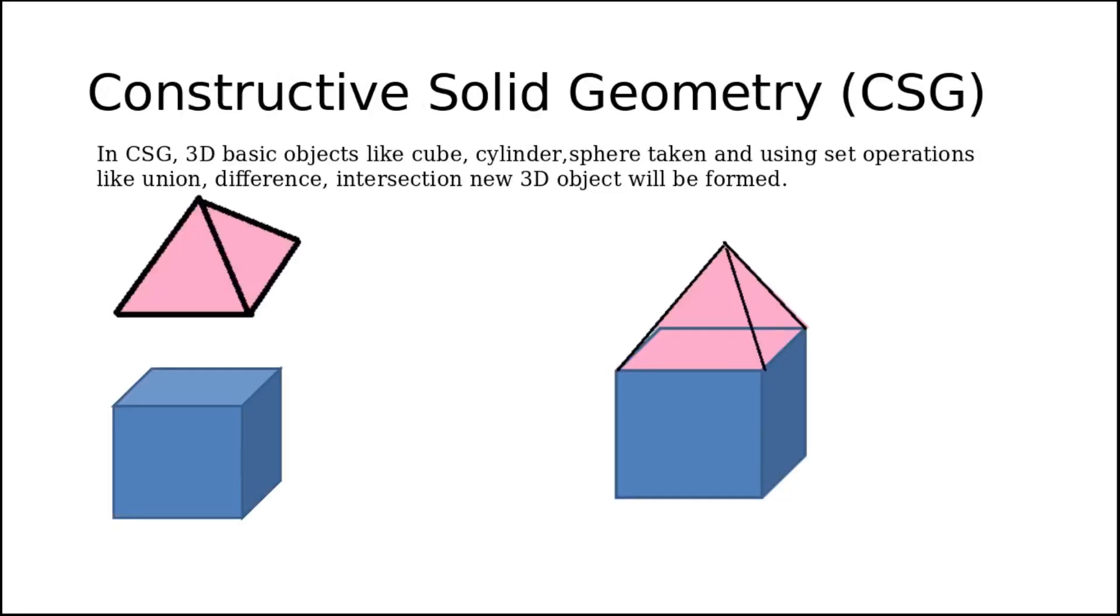The next method is constructive solid geometry (CSG). In this, you take 3D basic objects like cube, cylinder, sphere, and using various set operations like union, difference, or intersection, you can draw 3D objects. Here, this is a pyramid and a cube. You can use the union operation to create this image, and this new image can also be used for further 3D object representations.